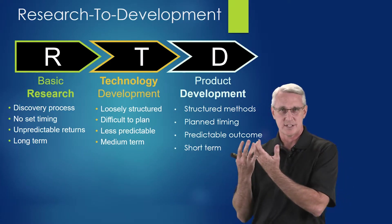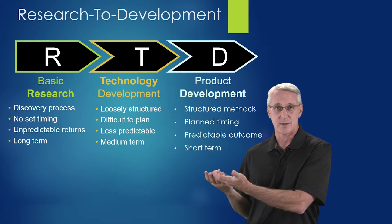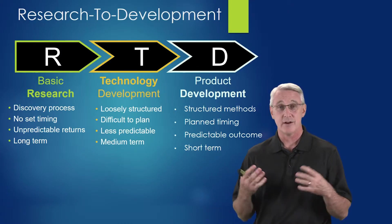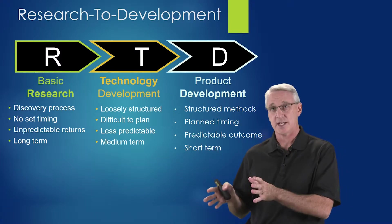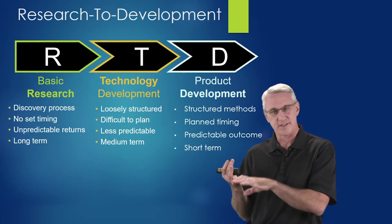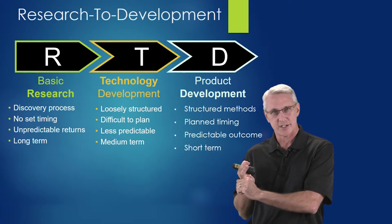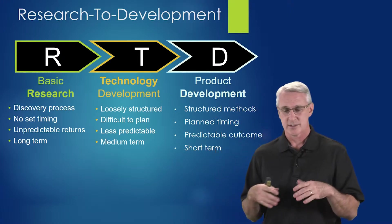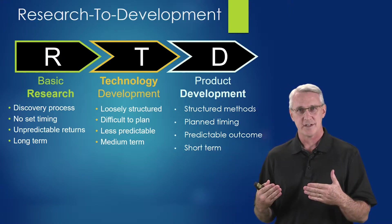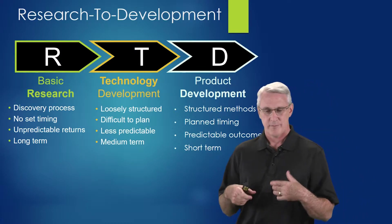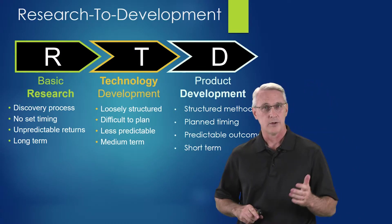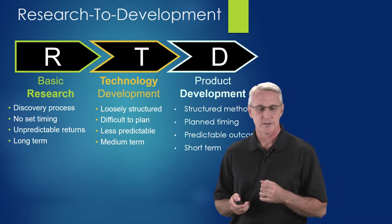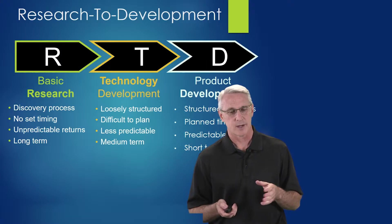What we're ultimately trying to get to is a technology or service that is a product that somebody can use. This is the development stage, because now we're taking it out of the prototype world and into the practical world. We've got to think of things like manufacturing, supply chains, how we're going to deliver and service — all those aspects. There are very structured methods on doing that, with planned timing and a predictable outcome. It's a much shorter-term process, and that's what you usually see with a lot of companies.